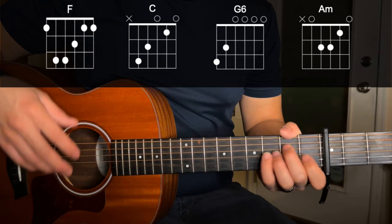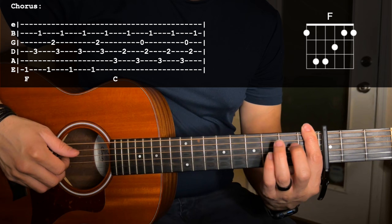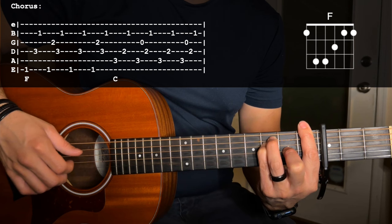So starting with that F chord, our root note is the first fret of the low E string, and you're going to do root, D, B, root, G, D, B.